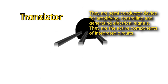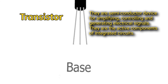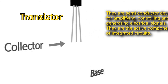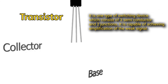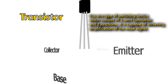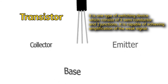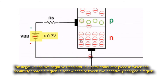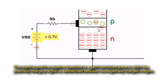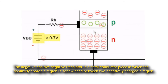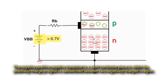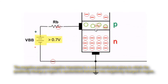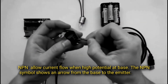Transistors are semiconductor devices for amplifying, controlling, and generating electrical signals. They are the active components of integrated circuits and a type of switching device, which consists of three semiconductor regions and two junctions, capable of achieving amplification of a weak signal. NPN transistor: the negative-positive-negative transistor is a semiconductor in which the positively charged P region is sandwiched between two negatively charged N regions. NPN allows current flow when there is high potential at the base.